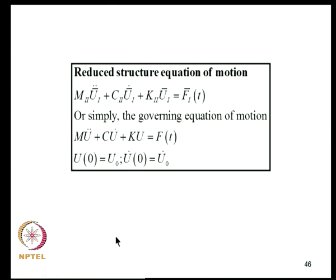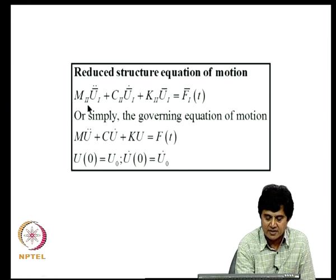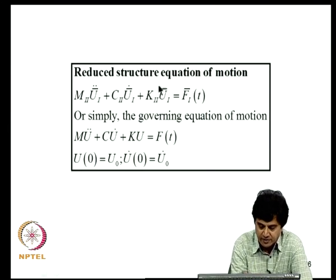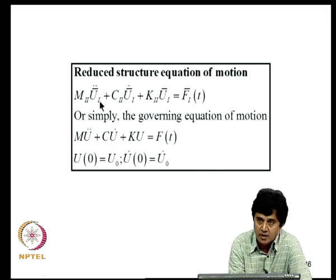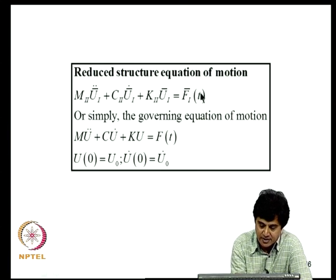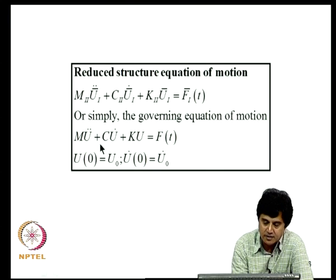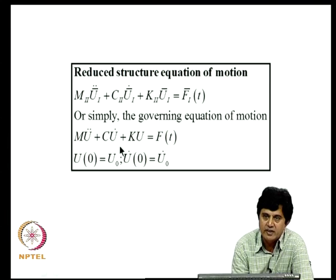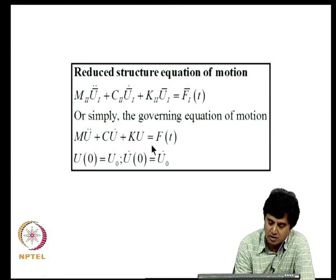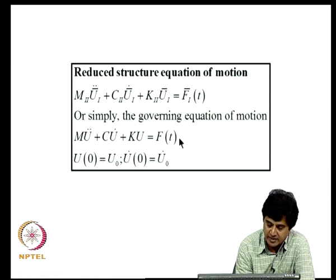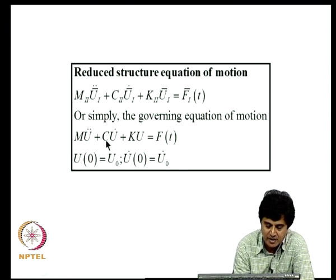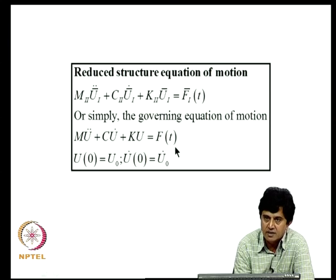Dropping the subscript notation, the governing equations for the unknown nodal displacements and velocities are simply written as M*U_ddot + C*U_dot + K*U = F with specified initial conditions. These are the governing equilibrium equations for the structure, accounting for boundary conditions and assembly. Since time T remains continuous, these are semi-discretized equations — we must further apply numerical time-integration methods to obtain discrete solutions for nodal displacements, velocities, and accelerations.